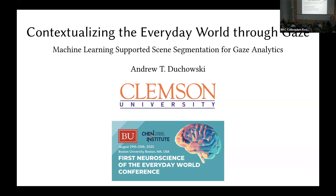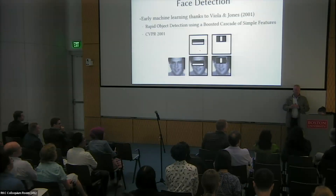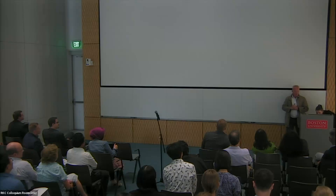I split this into four sections. Scene segmentation is about how we map the eye movement data we collect with our eye tracker onto objects of interest, faces of interest, or areas of interest — which we call AOIs in our line of work. I'll take you through a chronological history of how things worked, what's easy, what's hard, ending with state of the art.